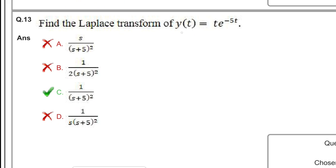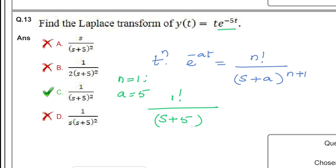Next question: find the Laplace transformation of y(t) = t·e^(-5t). The basic formula is: t^n·e^(-at) equals n!/(s+a)^(n+1). Here n = 1 and a = 5. So the Laplace transformation is 1!/(s+5)² = 1/(s+5)². C is the correct option.